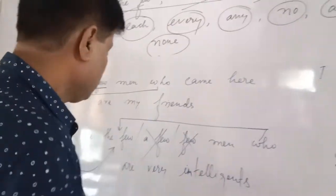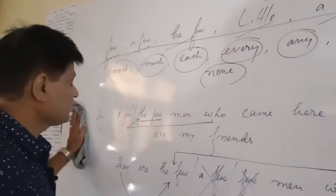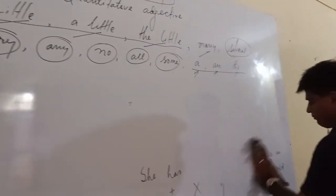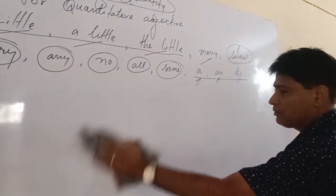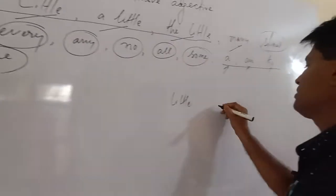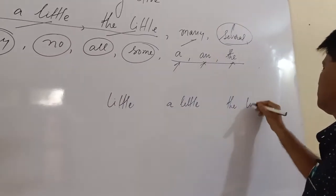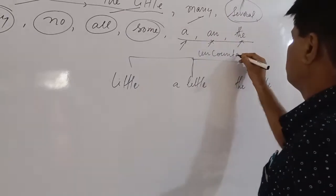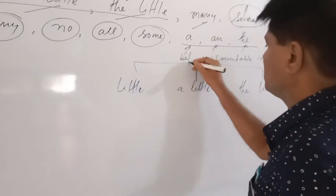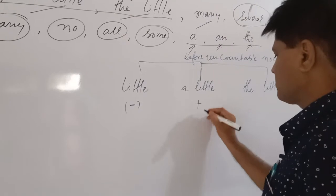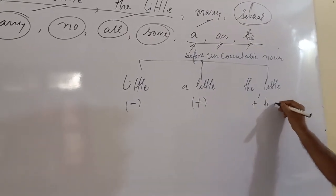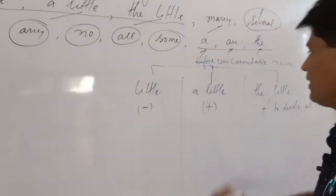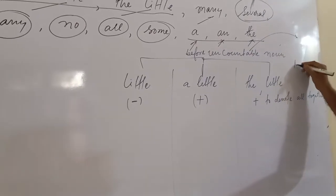Now let us learn 'little,' 'a little,' and 'the little.' While 'few,' 'a few,' and 'the few' are used for countable nouns, 'little,' 'a little,' and 'the little' are used for uncountable nouns. 'Little' carries a negative or minus sense, 'a little' carries a positive sense, and 'the little' denotes all together.